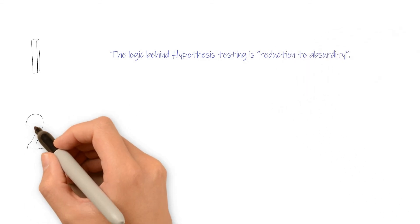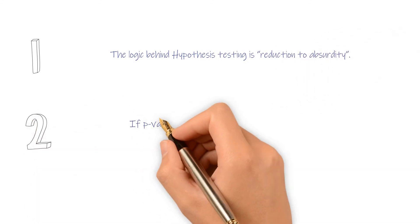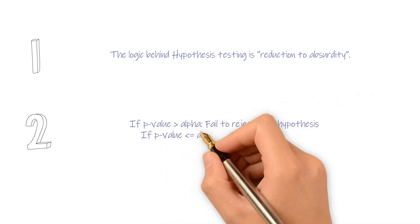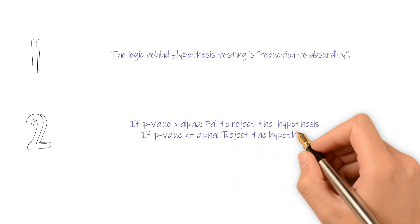Number two: If p-value greater than alpha, fail to reject hypothesis. If p-value less than alpha, reject hypothesis.